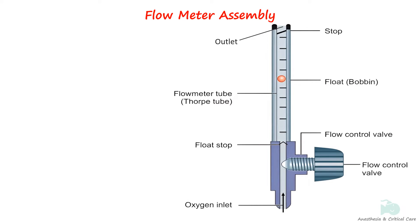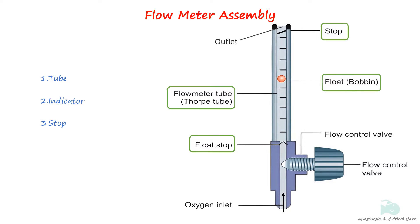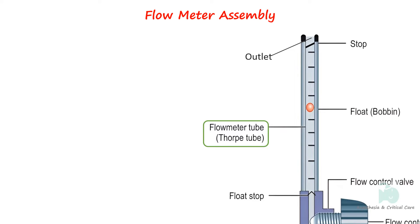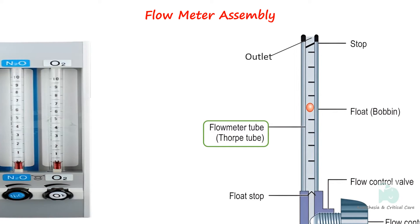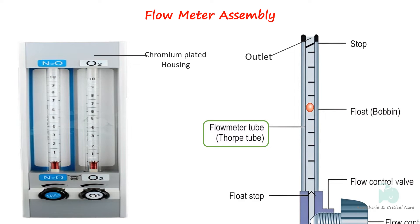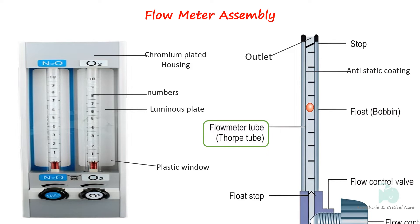A flow meter is an assembly of different parts including the tube, its indicator, and the stop. The tube, known as the Thorpe tube, is contained in a chromium-plated metal casing protected by a plastic window and is inscribed with numbers that correspond to gas flow rates. The backplate of the flow meter is luminous to allow for easy visualization. The tube is also coated with anti-static material to prevent the indicator from sticking to it.